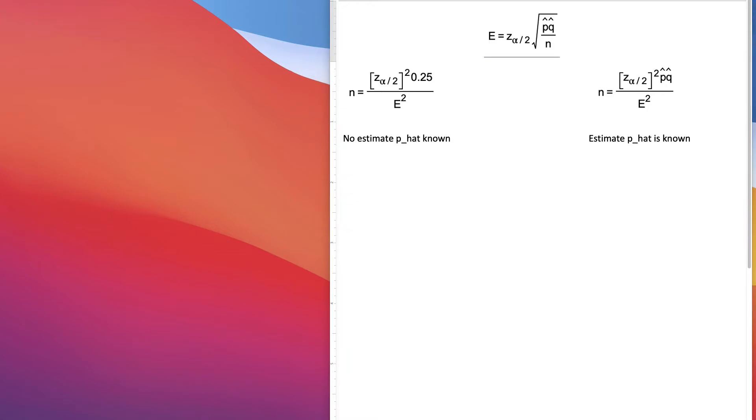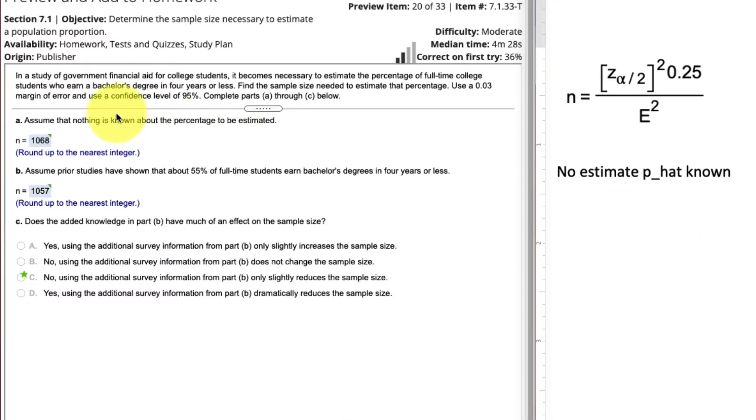Let's look at an example here. In a study of government financial aid for college students, it becomes necessary to estimate the percentage of full-time college students who earn a bachelor's degree in four years or less. So basically, we need to know the sample size to estimate that percentage. Use .03 margin of error, and use a confidence level 95%. So assume that there's nothing known about the percentage to be estimated. So we have no estimate for p-hat. We have no estimate for the sample proportion. There's no estimate. We're going to use this equation here.